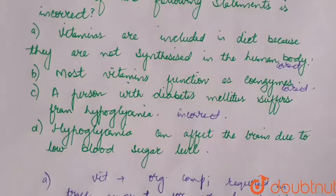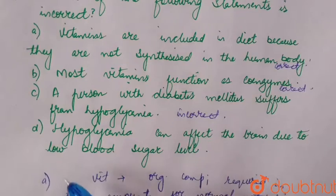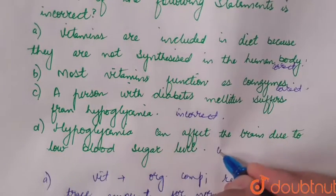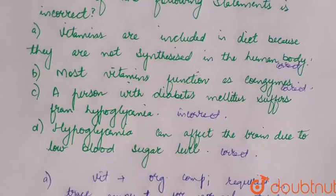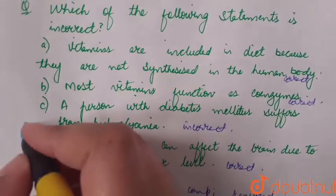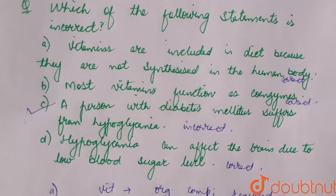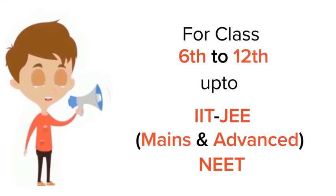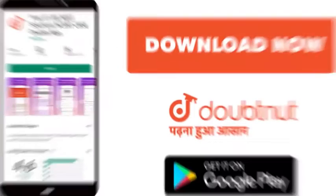The next statement is: hypoglycemia can affect the brain due to low blood sugar levels. This is a correct statement. So the correct option is option C. Thank you. For class 6–12, IIT JEE, and NEET level — trusted by more than 5 crore students — download DoubtNut today.